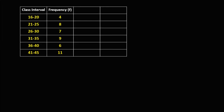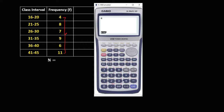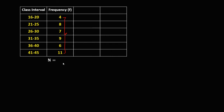We have this given class interval and the frequency. First, we need to find the total frequency, so that's n. Just add all these numbers: 4 plus 8 plus 7 plus 9 plus 6 plus 11. So the total frequency is 45, so n is equal to 45.